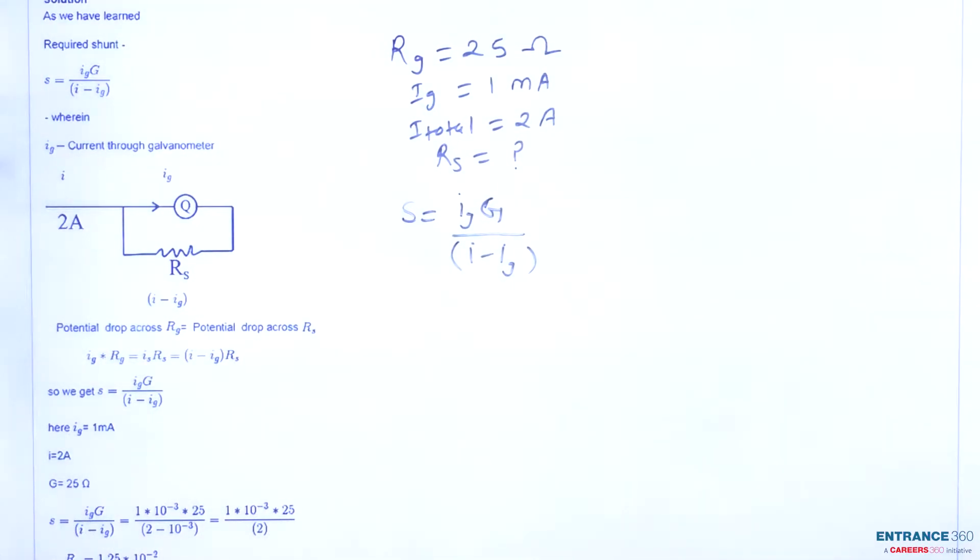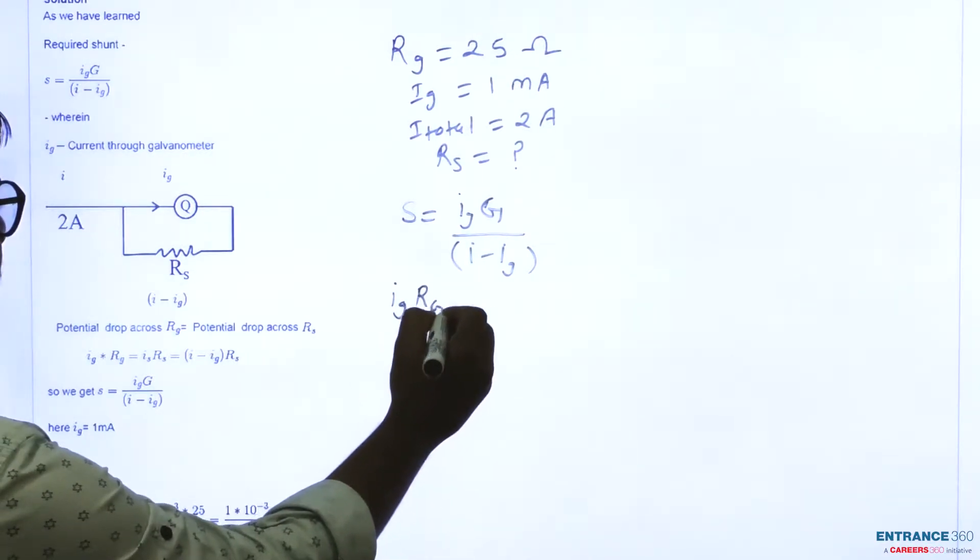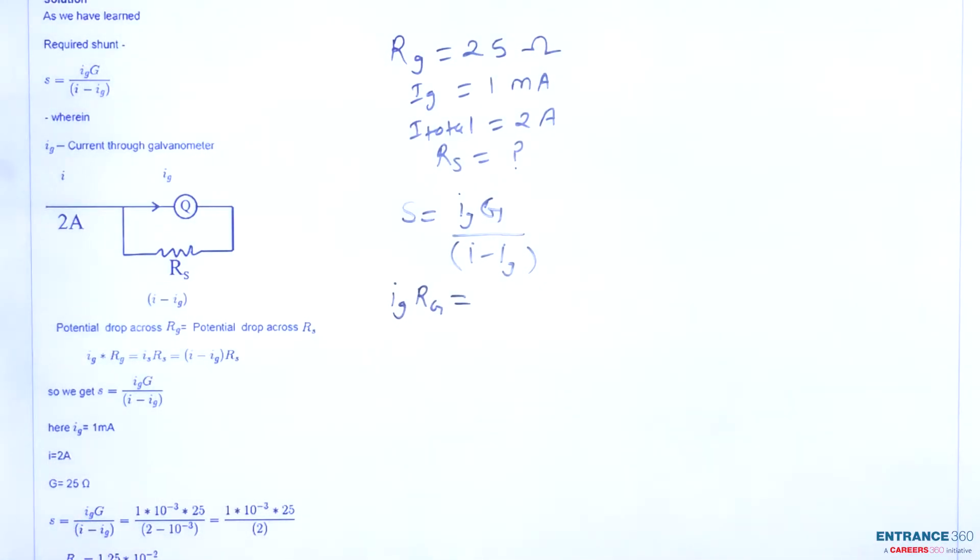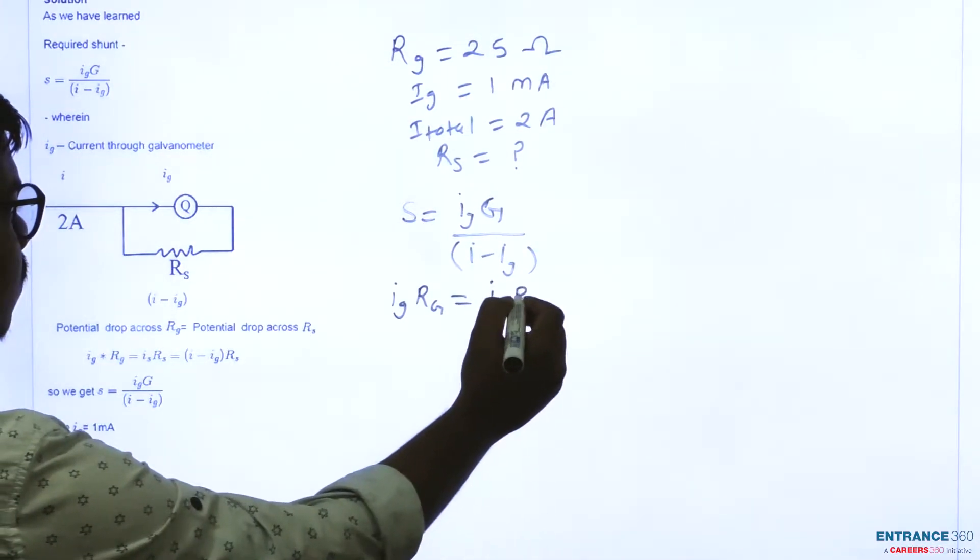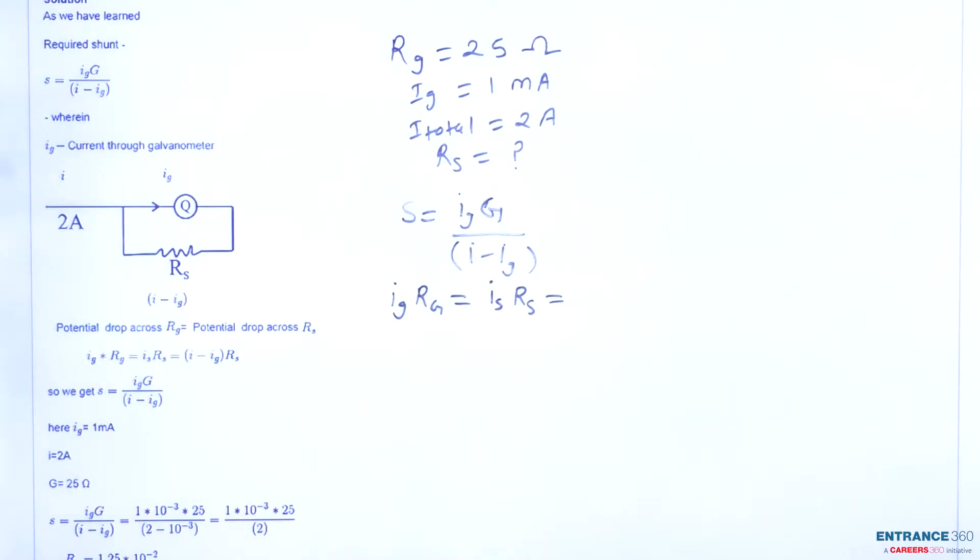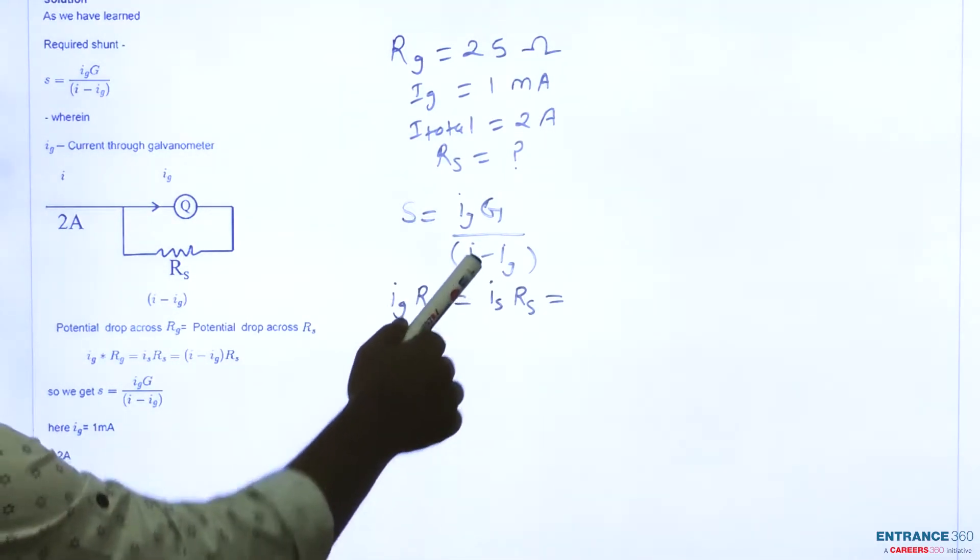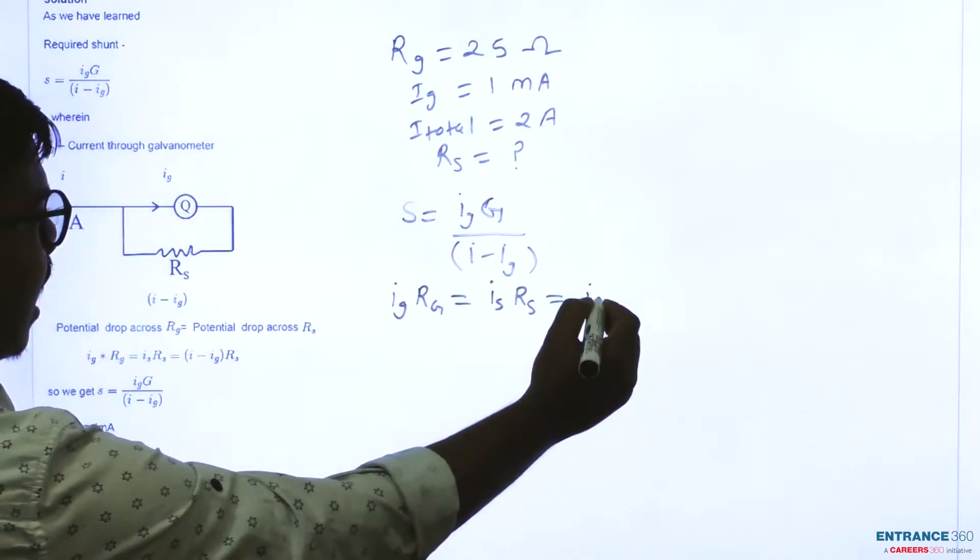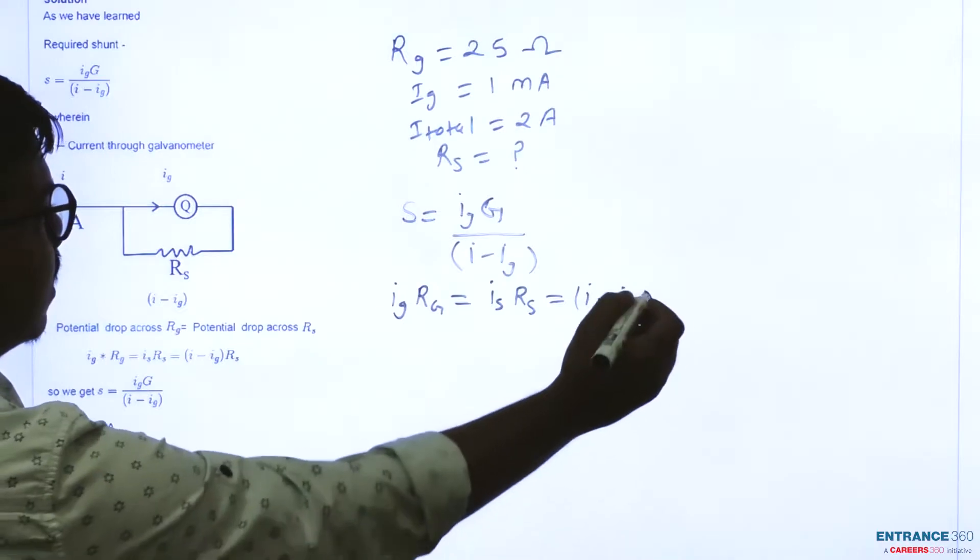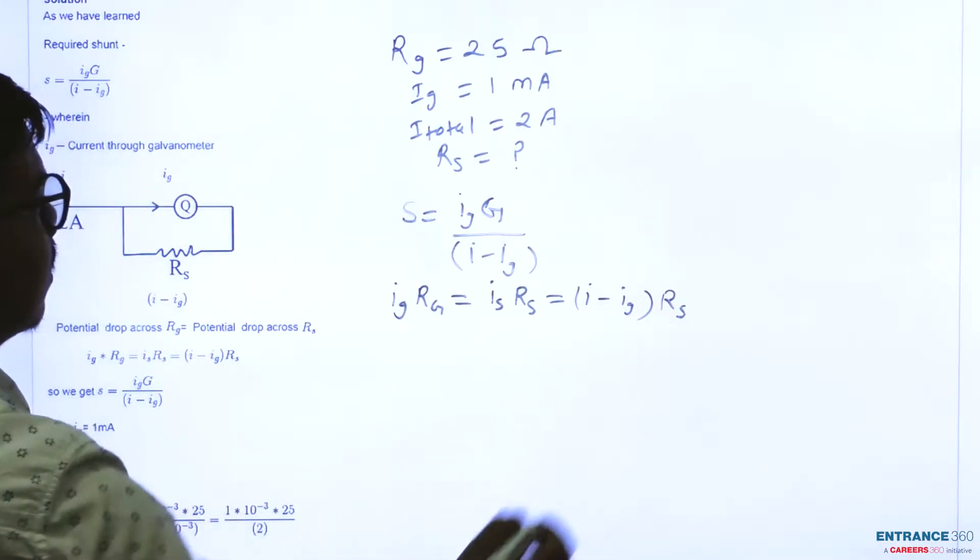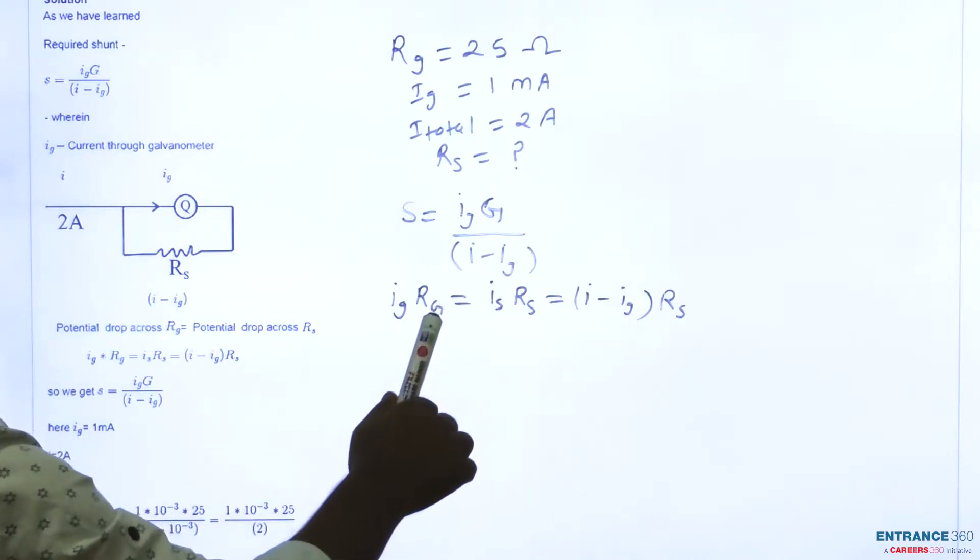So what is voltage drop across Rg? That is simply Ig into Rg. What is voltage drop across Rs? That is Is into Rs. And we can also write Is in terms of Ig and I, that is total I minus Ig. This will be equal to Is into Rs. So if S is the Rs and G is the Rg, then from this formula we can find out relation between S and G in terms of current.